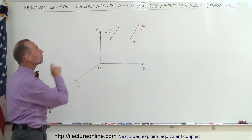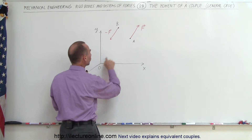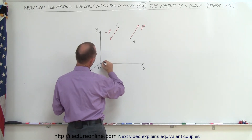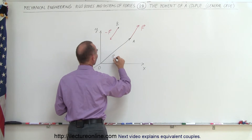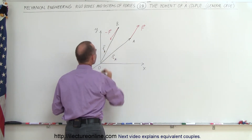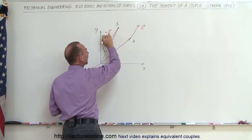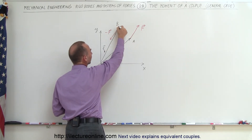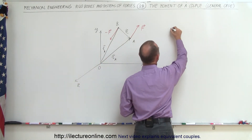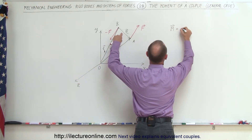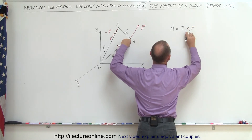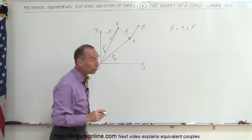Now we're going to calculate the moment caused by that. What we're going to do is draw a position vector from the origin to point A, and from the origin to point B. So here we'll call this position vector R sub A, and here is our position vector R sub B. The vector from the start of the negative force to the start of the positive force, let's call this vector R — this is the vector that connects the two forces. We already know that the moment can be calculated by taking that position vector R, multiplied via the vector product with the force F, and that's going to be the moment.